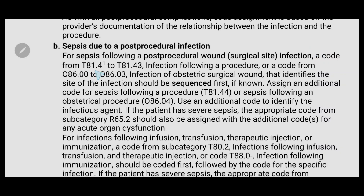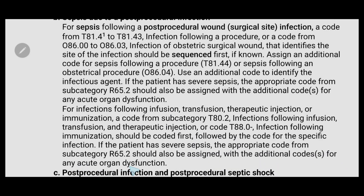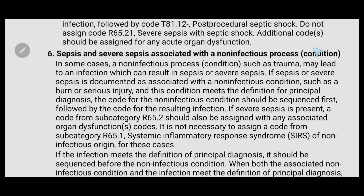For sepsis due to post-procedural infection, the first code should be T81.40–T81.43 (infection following a procedure) or O86.00–O86.03 (infection of obstetric surgical wound), sequenced first. The additional code for sepsis following the procedure, T81.44, should be assigned as the second code. The third code should be the infectious agent, and the fourth code will be R65.2 if severe sepsis is mentioned. Code for acute organ dysfunction if present.